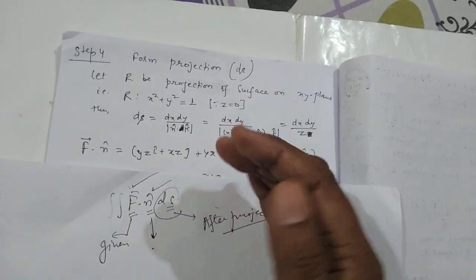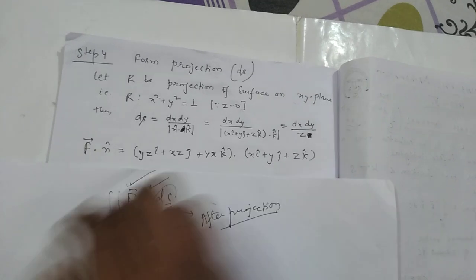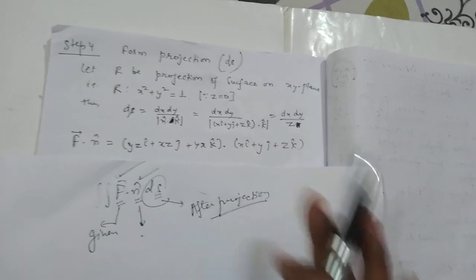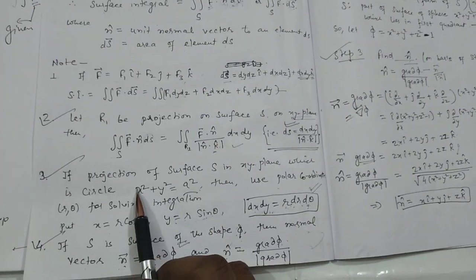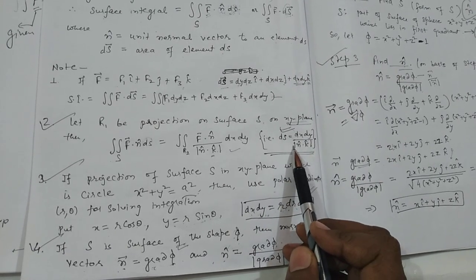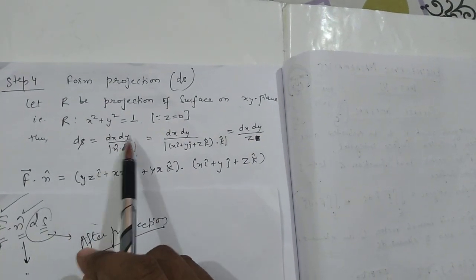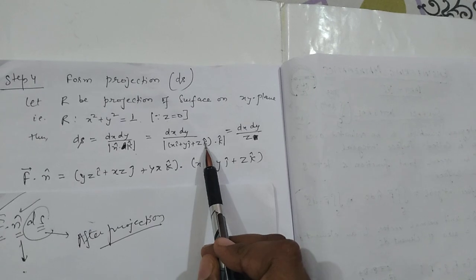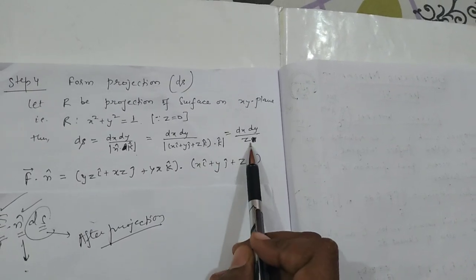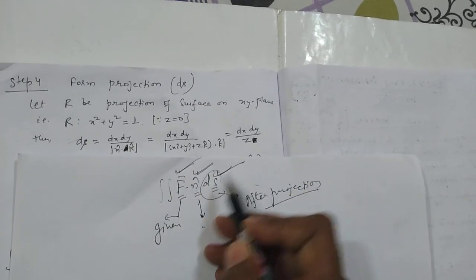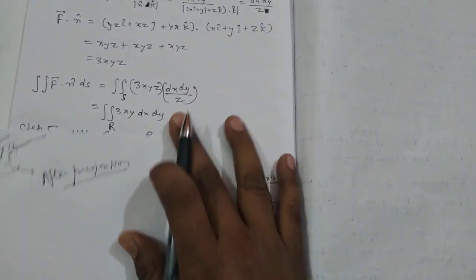Since we are in the first quadrant, the projected region is a quarter circle. Our n̂ = xî + yĵ + zk̂, so n̂ · k̂ = z. Therefore dS = dx dy / z. Now we compute F·n̂. F is given, and n̂ = xî + yĵ + zk̂. Taking the dot product gives 3xyz. So F·n̂ = 3xyz.